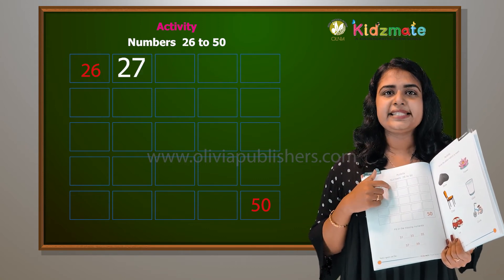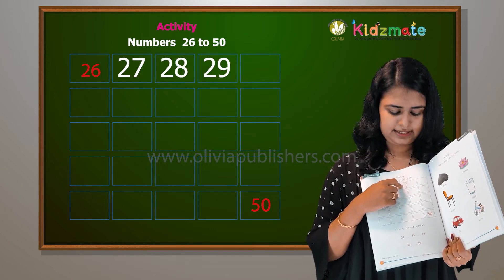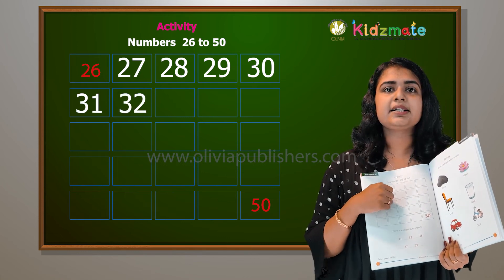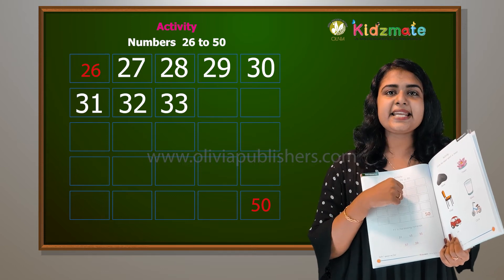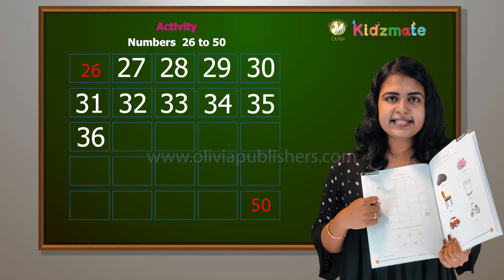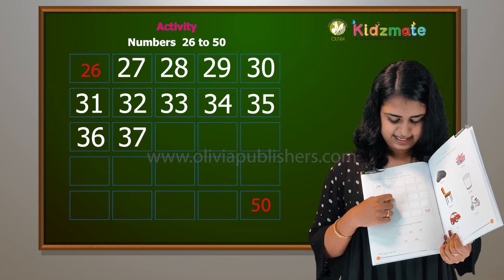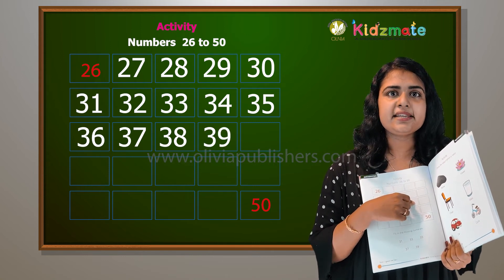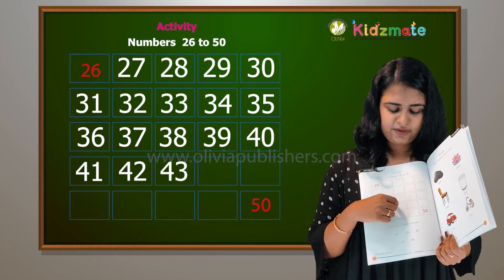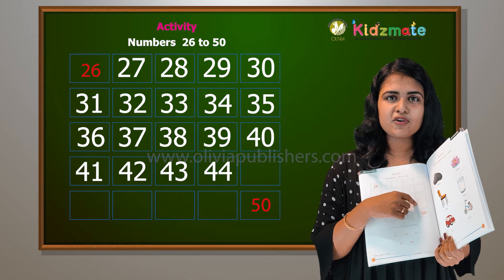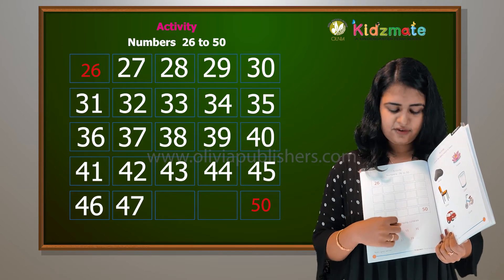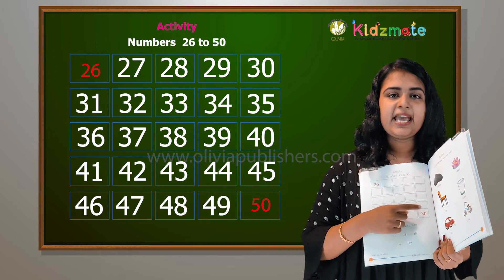Twenty-six, twenty-seven, twenty-eight, twenty-nine, thirty, thirty-one, thirty-two, thirty-three, thirty-four, thirty-five, thirty-six, thirty-seven, thirty-eight, thirty-nine, forty, forty-one, forty-two, forty-three, forty-four, forty-five, forty-six, forty-seven, forty-eight, forty-nine, and fifty.